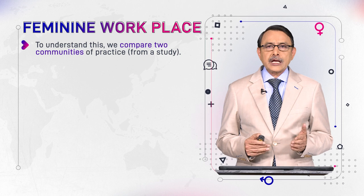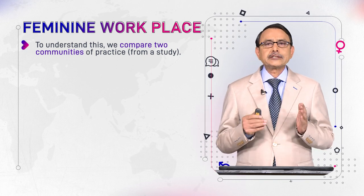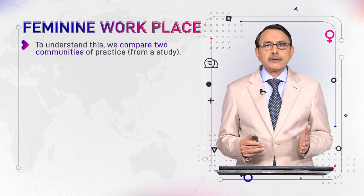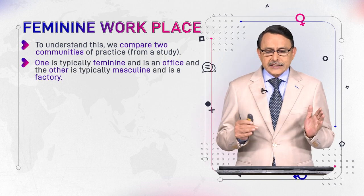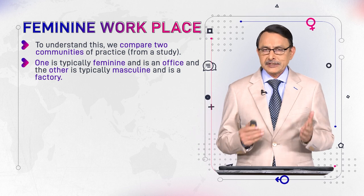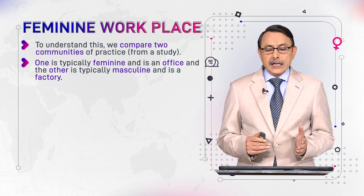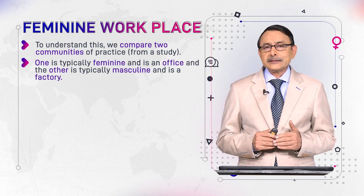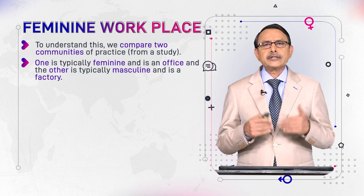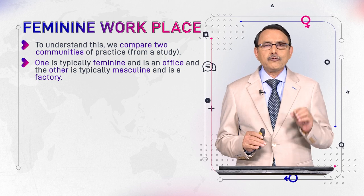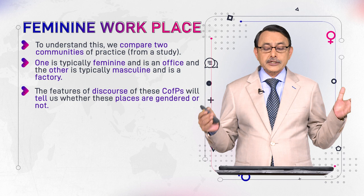To understand this, we compare two communities of practice taken from an actual research study conducted in two different settings. One CoP was an office and the other was a factory. The office is typically feminine because the staff and head are female. The factory is typically masculine, as males tend to dominate manual and technical work there. So one workplace is dominated by female staff and the other by male staff.